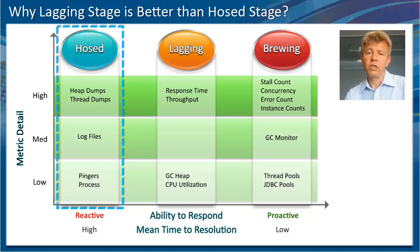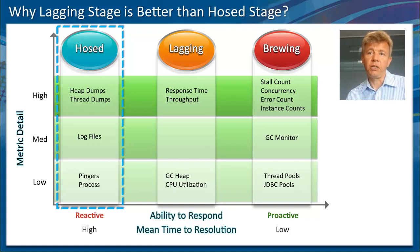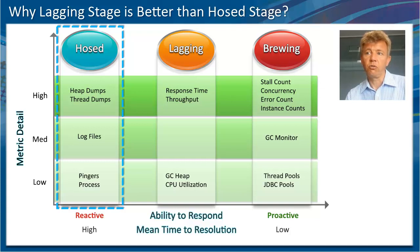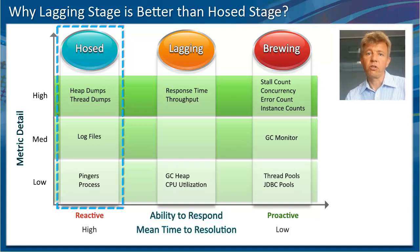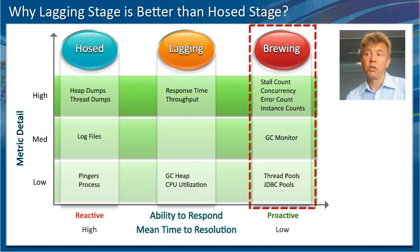The host stage is where users are already impacted and your business has been affected — users are already complaining about application performance. In this situation, you would be monitoring log files, writing certain messages to them, thread dumps, and loop dumps. You can still identify the issue, but users are already impacted — it's a very reactive way of monitoring. That's why it's always good to focus on identifying issues in the brewing stage, where they can be resolved with minimal impact to the organization.